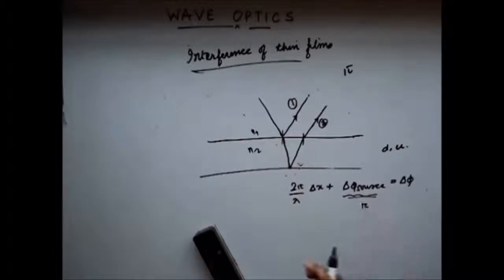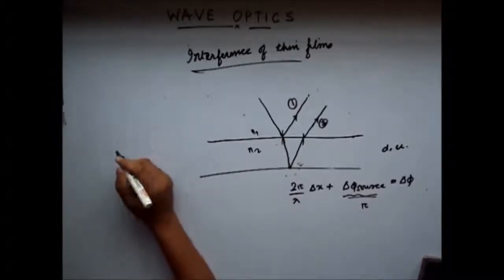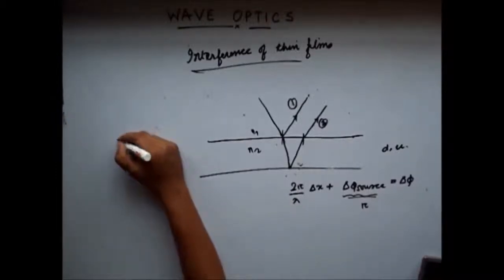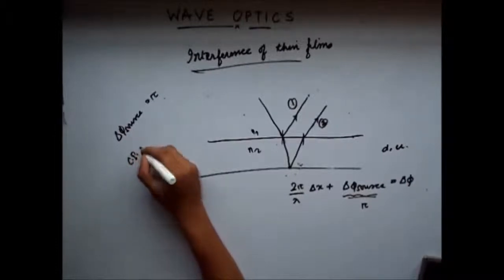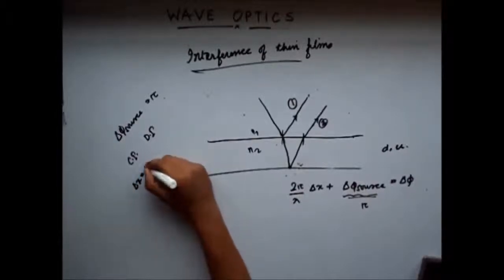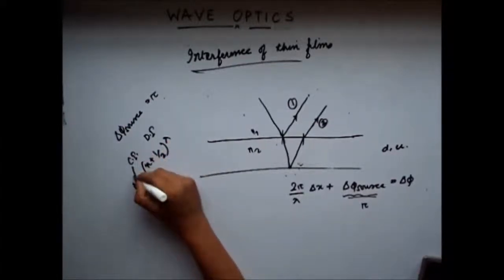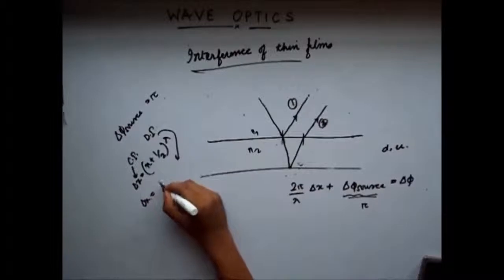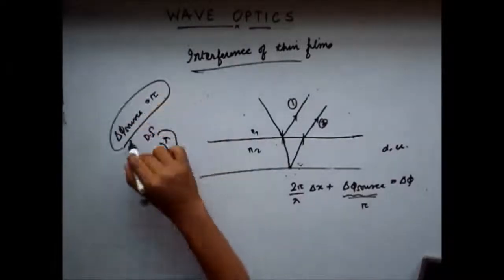So delta-phi source is equal to pi. As we had studied in the case of Lloyd's mirror, when we have a phase difference of pi between the sources, the conditions for constructive and destructive interference are reversed. So my condition for constructive interference will be delta-x equal to (n + ½)λ, and my condition for destructive interference will be delta-x equal to nλ, because there is a phase difference of pi between the two sources.